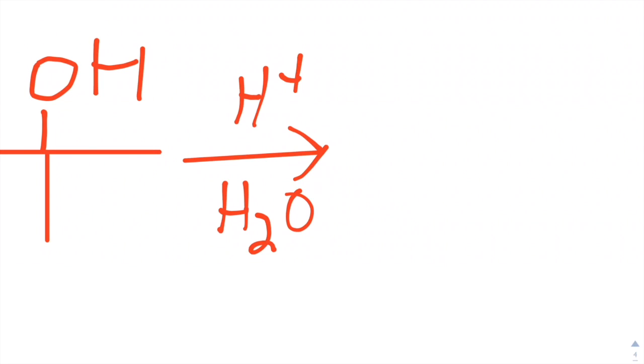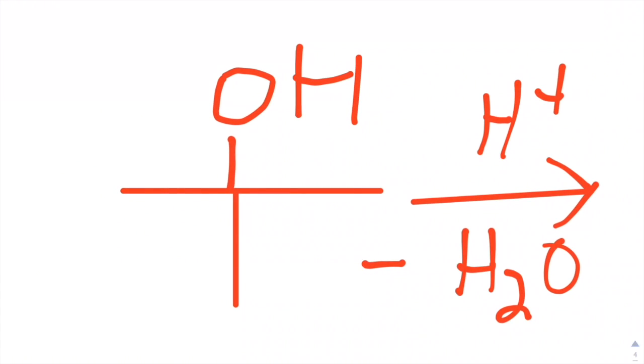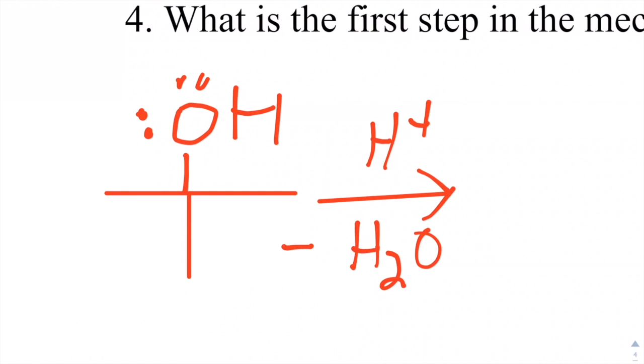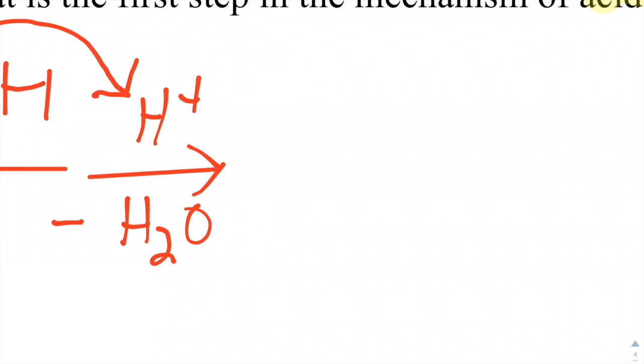Okay, so first thing we should do is protonate our most electronegative atom over here, this oxygen. Because it has its lone pairs, that tells us it's really the only mechanism we can do. Carbons don't have any spare electrons to grab this proton. So we grab that, and we make water in our next step.